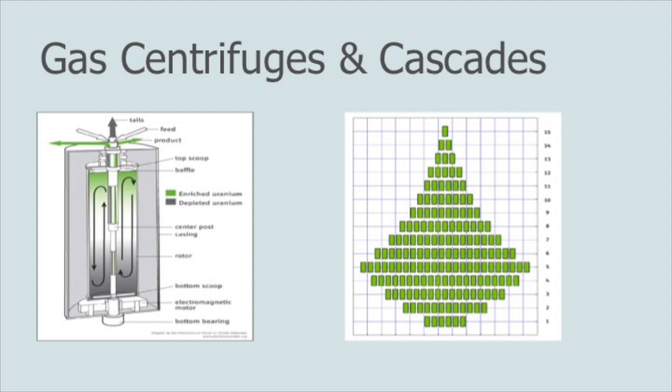And the centrifuge has a feed line, a tails line, and a product line. So the tails is a depleted uranium, sometimes it's referred to as the waste, but the tails or the waste is depleted in uranium-235 and the product is enriched in uranium-235. So you see the different pictures there, the enriched uranium is green and the depleted uranium is whatever color that is. So I'm a little color blind, so I can't tell you exactly what color that is.